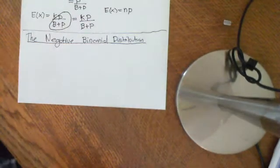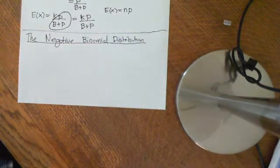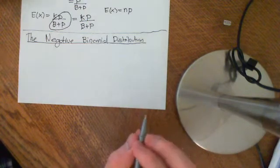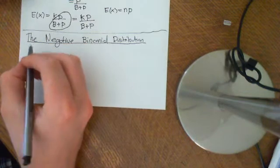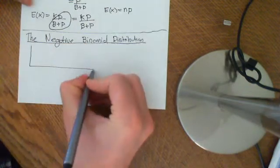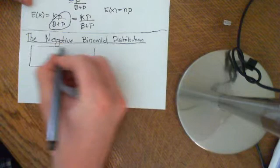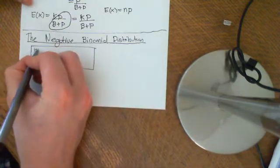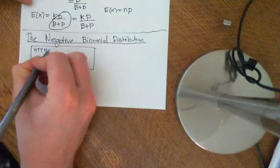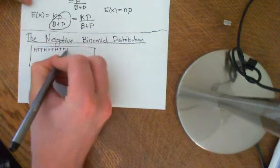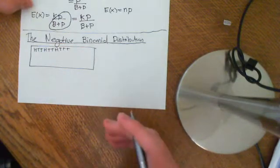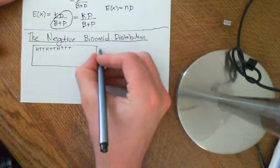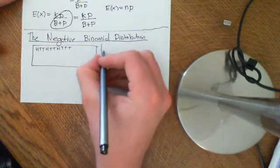Let's begin by stating the relevant problem from which the Negative Binomial Distribution arises. The problem is this: let's flip a coin countably infinitely many times, as with the geometric distribution. So you could get heads, tail, tail, head, tail, tail, head, tail, tail, tail, and it could go on and on. You put every single outcome of this probability distribution into this probability space.